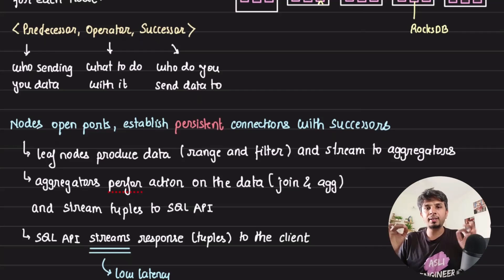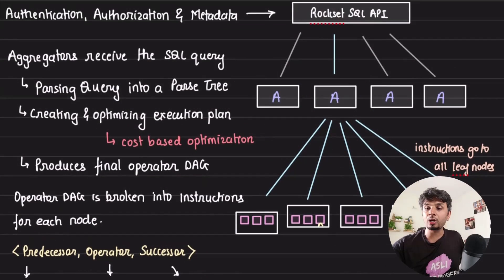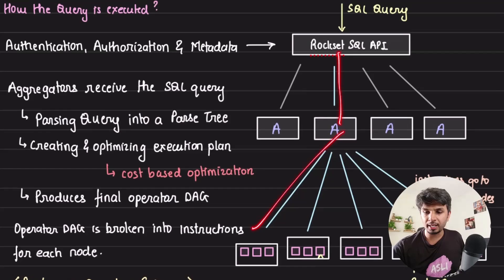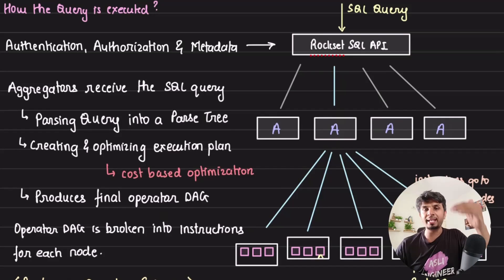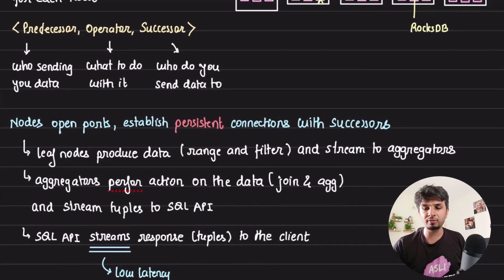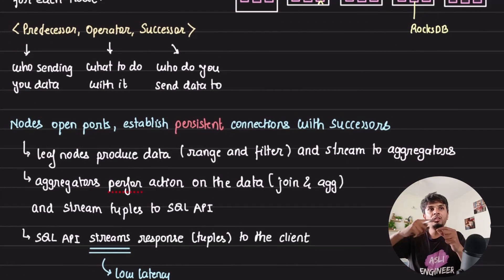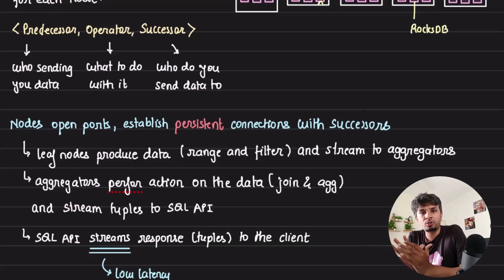Every single node will open up ports. Persistent connections will be built across the layers - from leaf to aggregators across all the nodes that are there. The persistent connections would be built and the leaf node will start iterating, doing range lookup or whatever it needs to do.